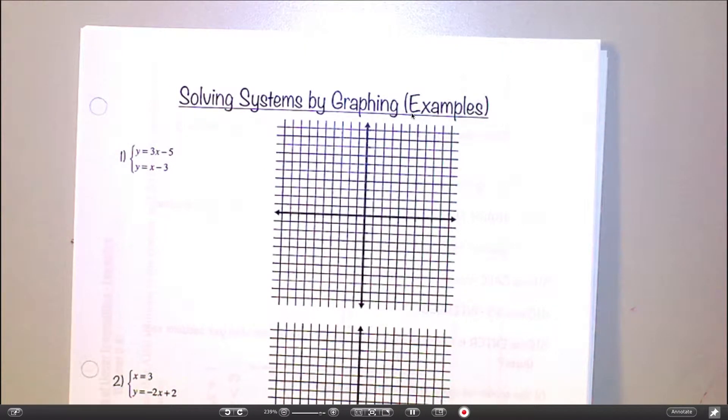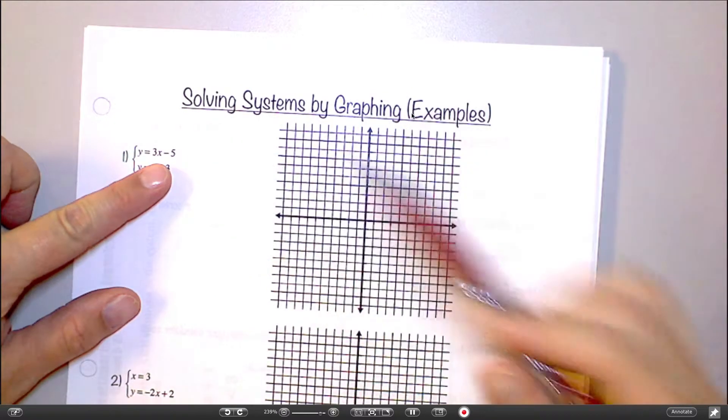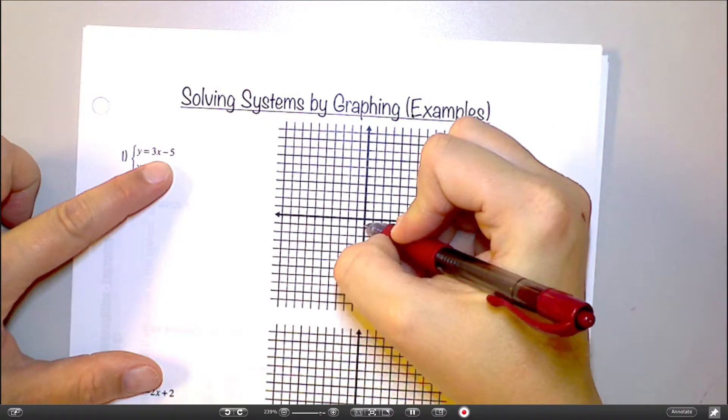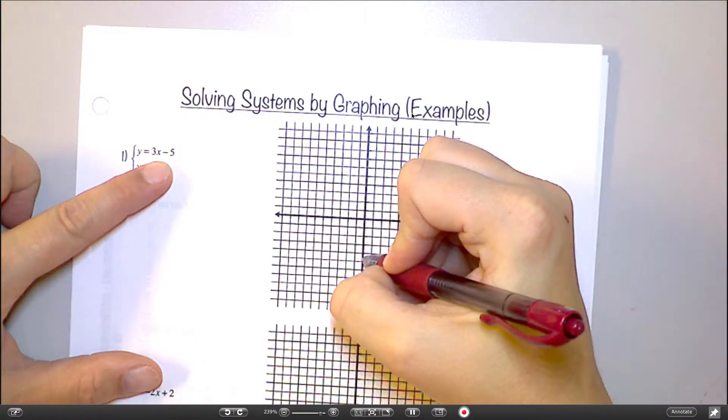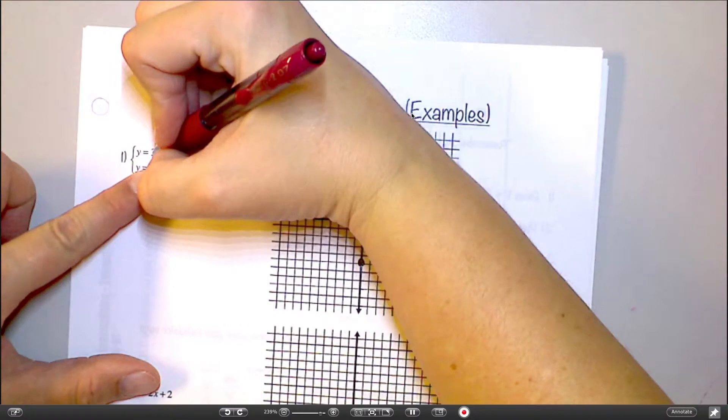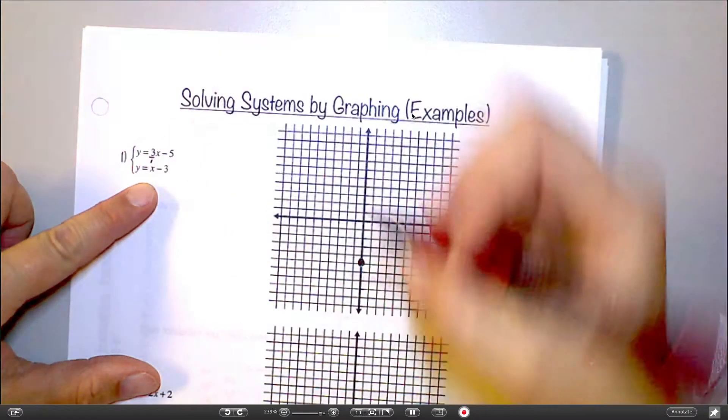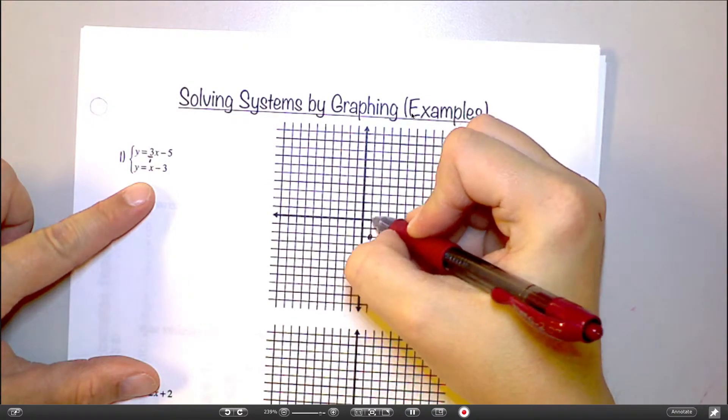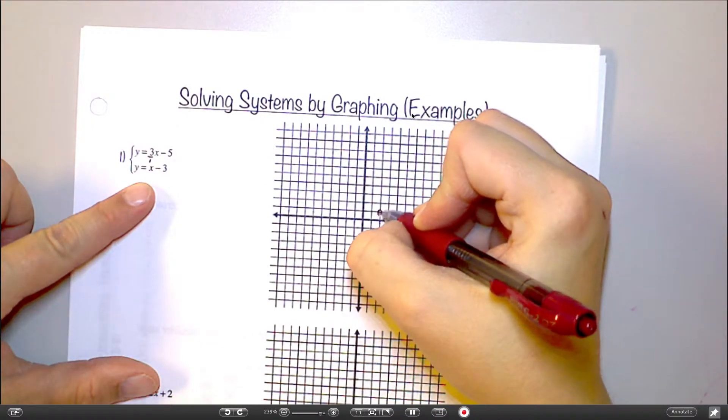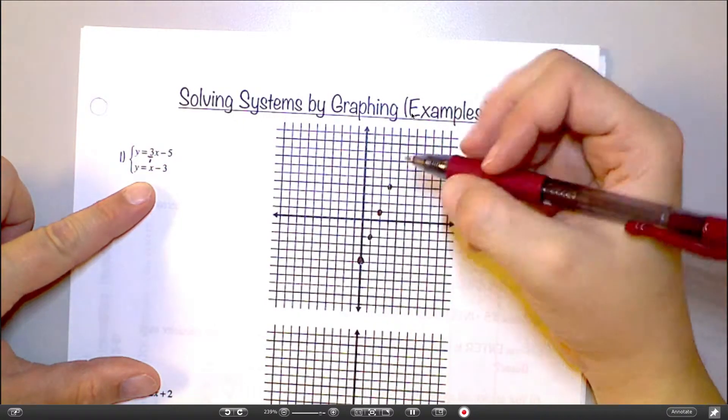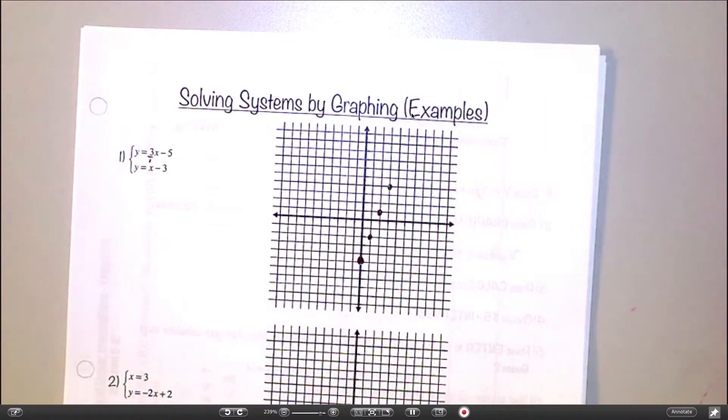All right, let's graph it and find out. How do I graph y equals 3x minus 5? Where do I start? Macy? On the y-axis. Yep. So here's negative 5. And then my slope is 3 over 1. So that means I'm going to go up 3 and over 1. Up 3 and over 1.